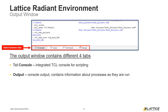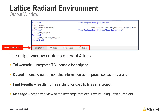The third tab, Find Results, contains the results from a project search in Lattice Radiant — if there are any matches, their file location and line number will be displayed in this window. The fourth and final tab is called Message. This tab contains an organized view of the various errors, warnings, and information messages that occur while using Radiant. If there are any new messages in this tab, a red dot will appear next to its name.